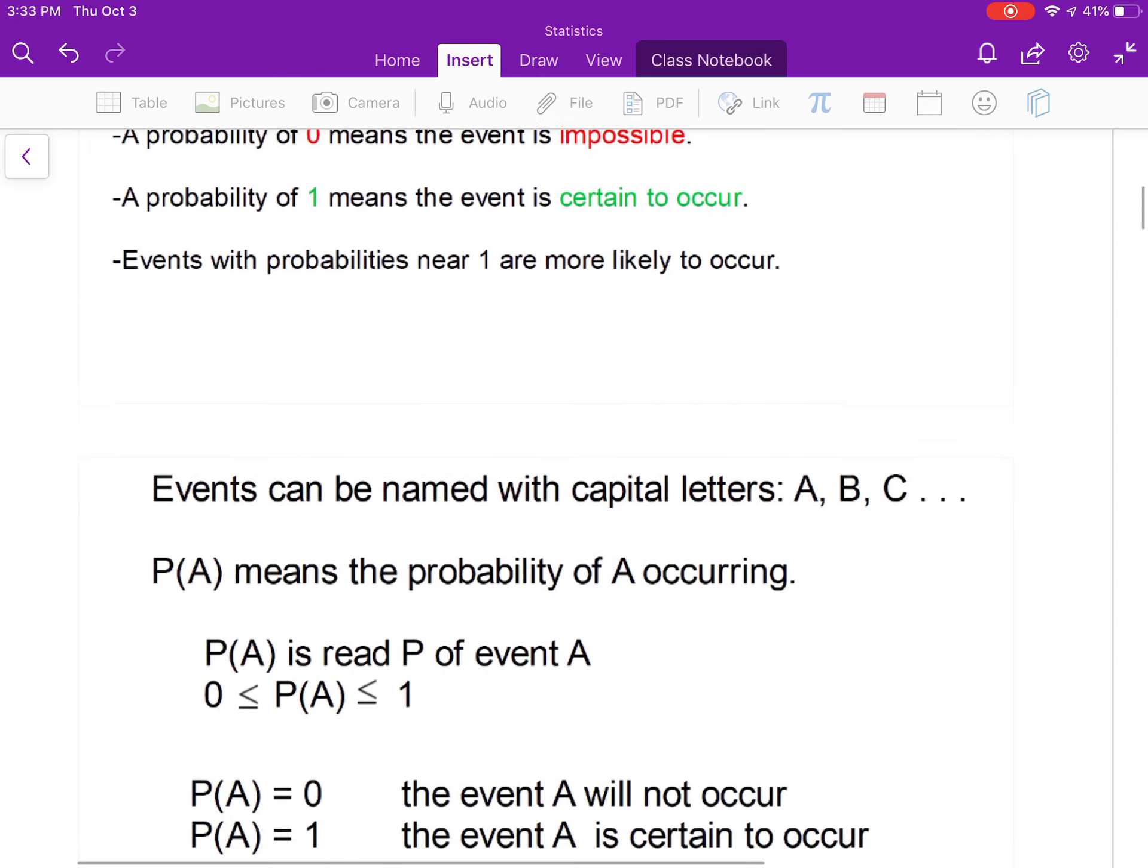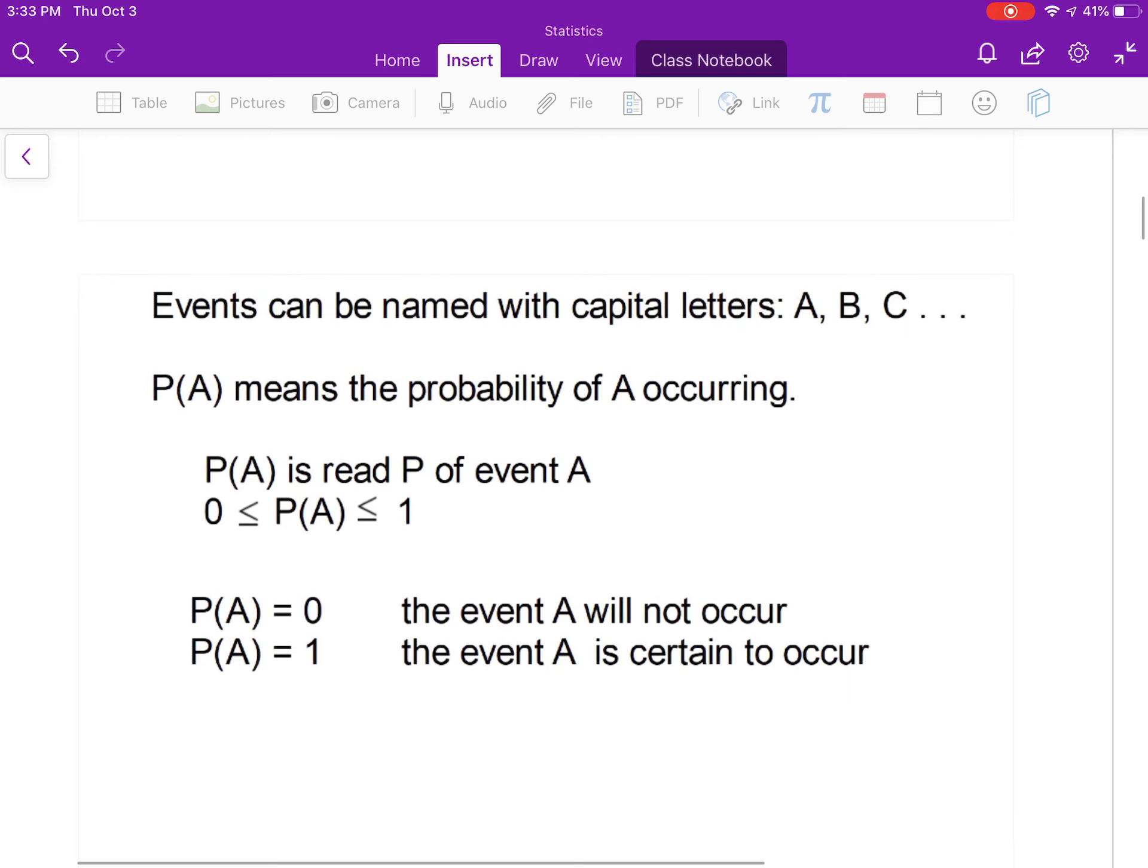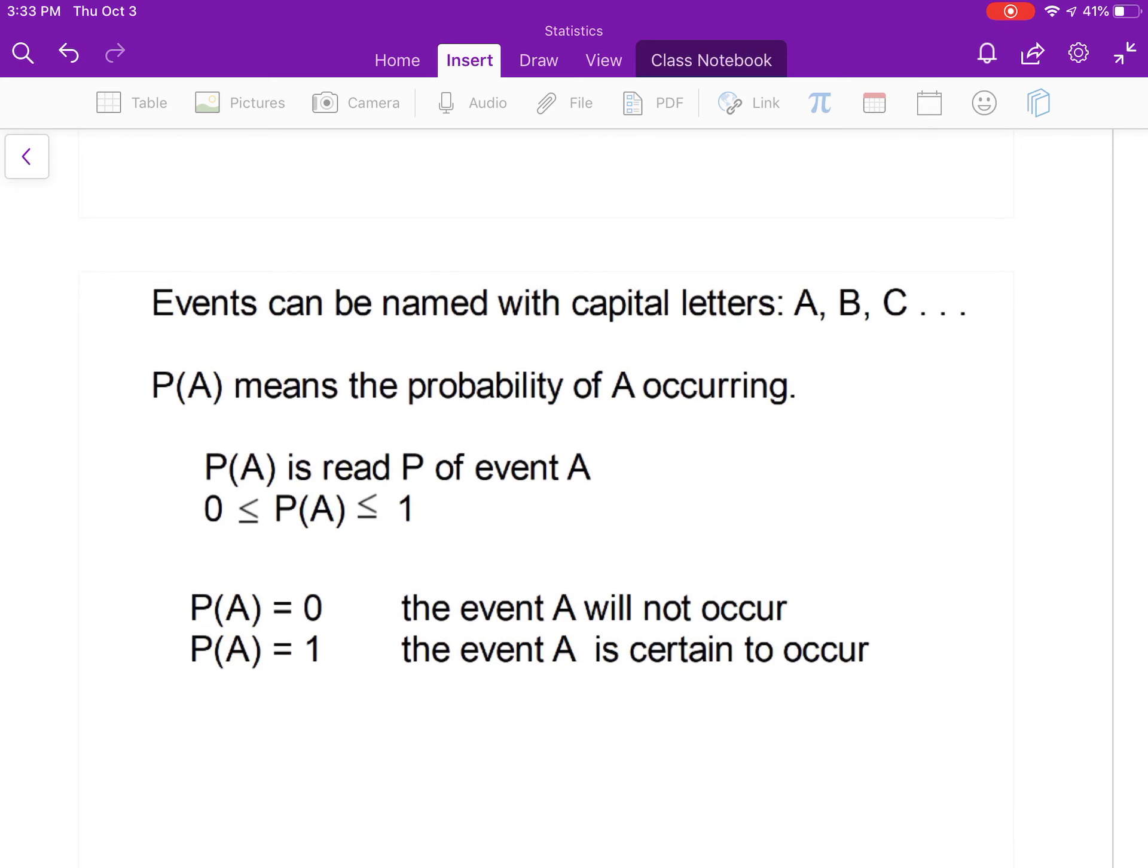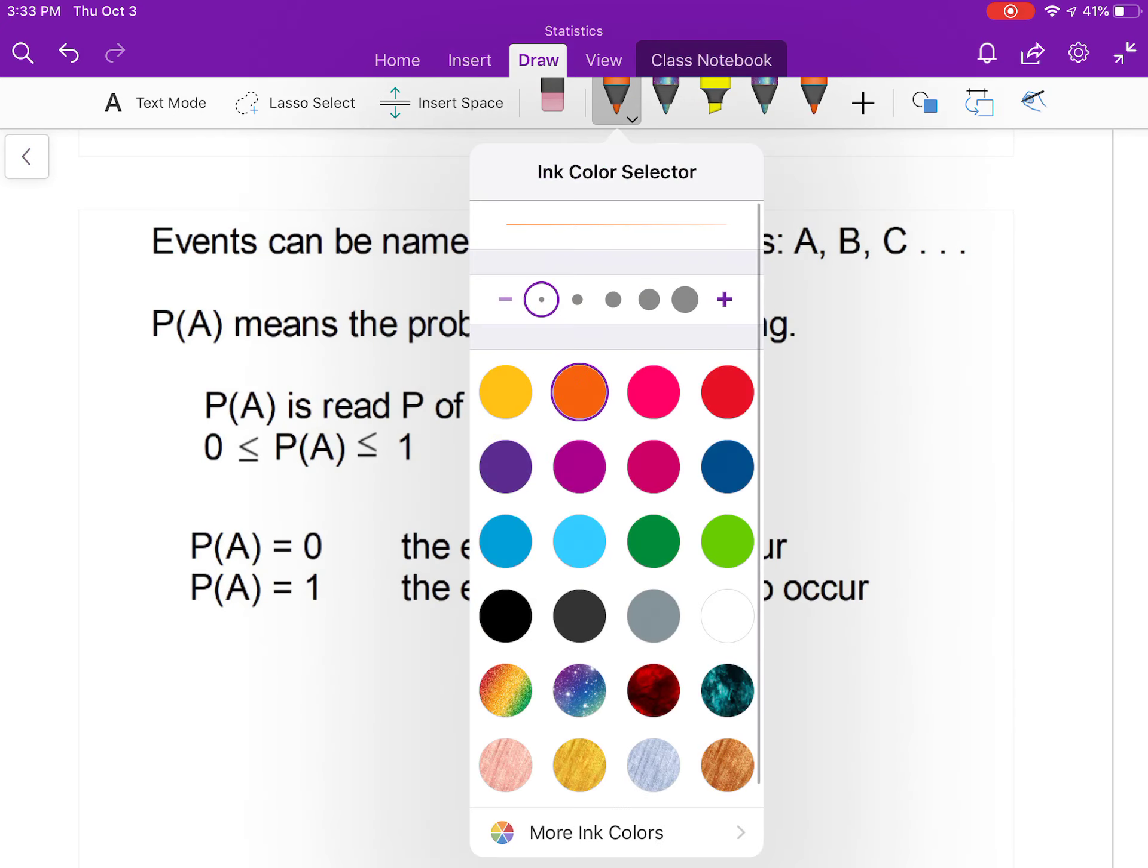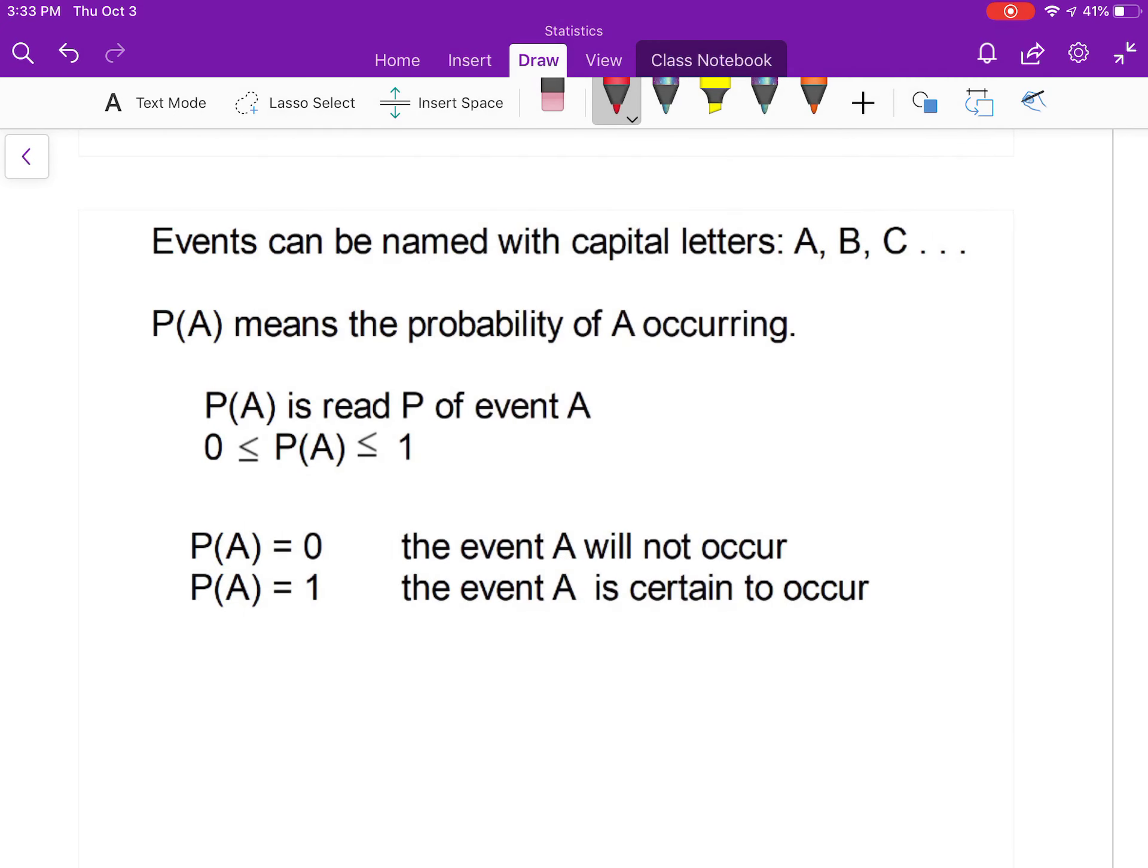A lot of this is the same probability that you've done in the past, maybe just with a little bit of notation. Events can be named with capital letters: capital A, capital B, capital C.